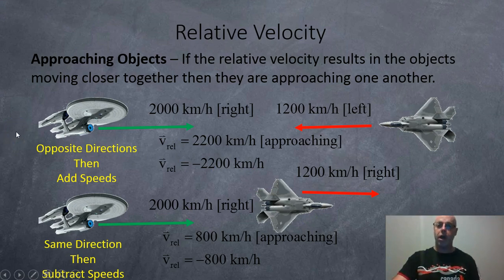Approaching objects: if the relative velocity results in the objects moving closer together, then they're approaching one another. So for example, here are two objects traveling head-on, or here one object catching up to another one from behind.